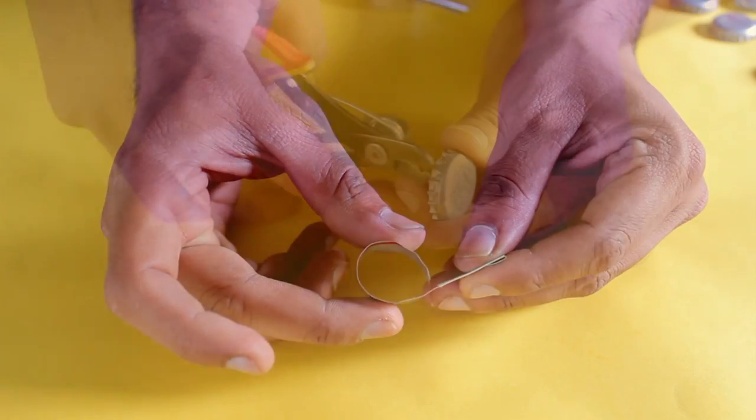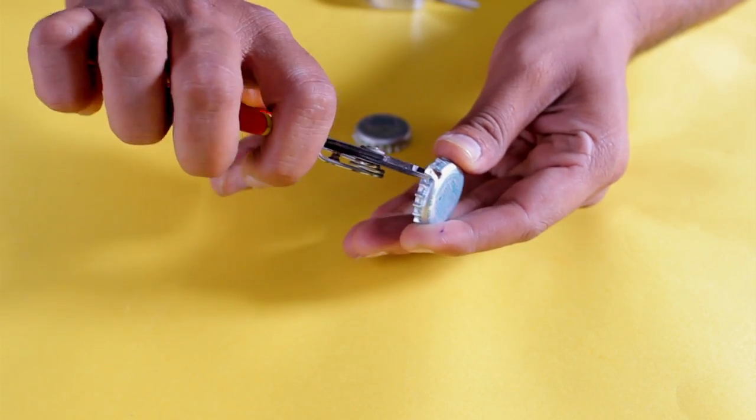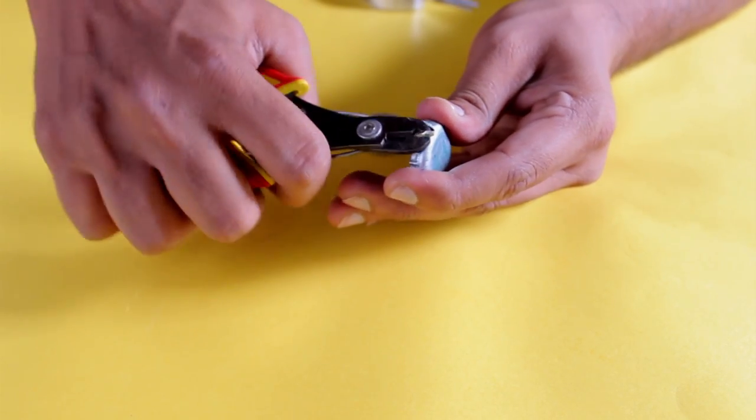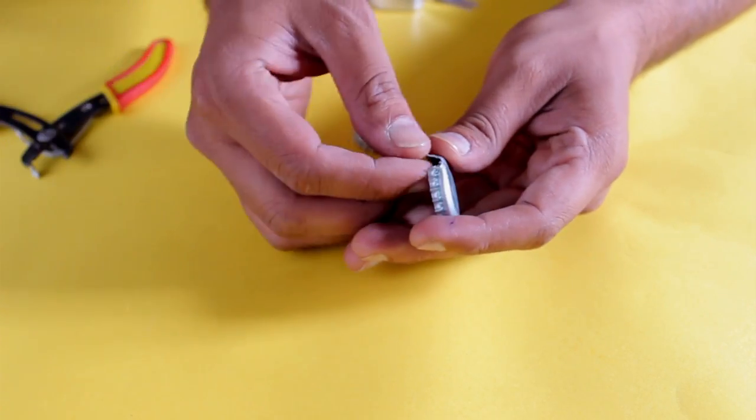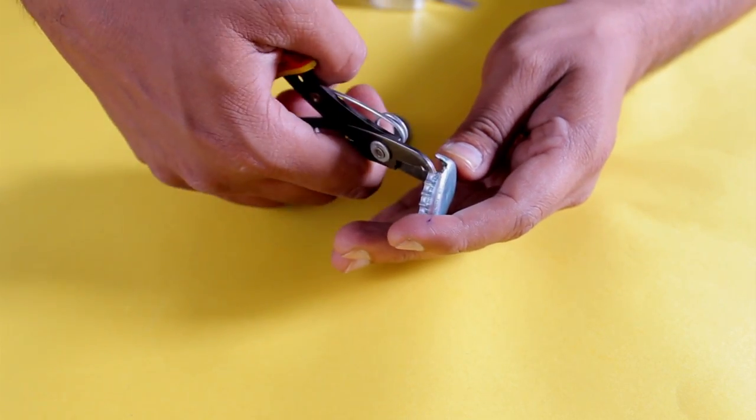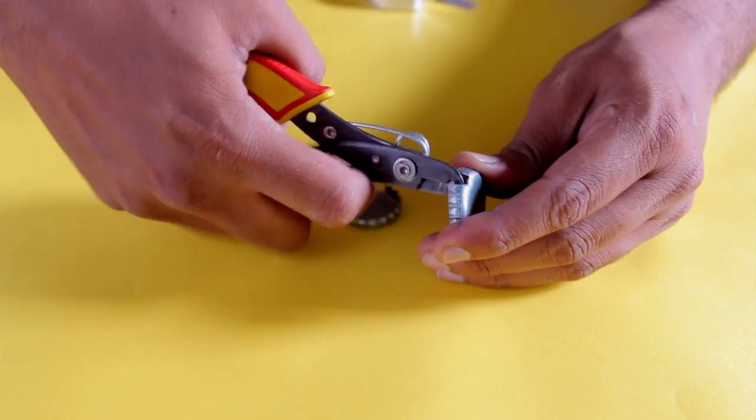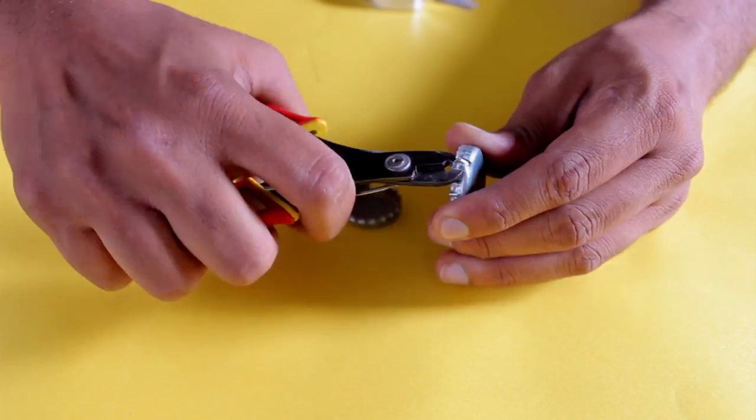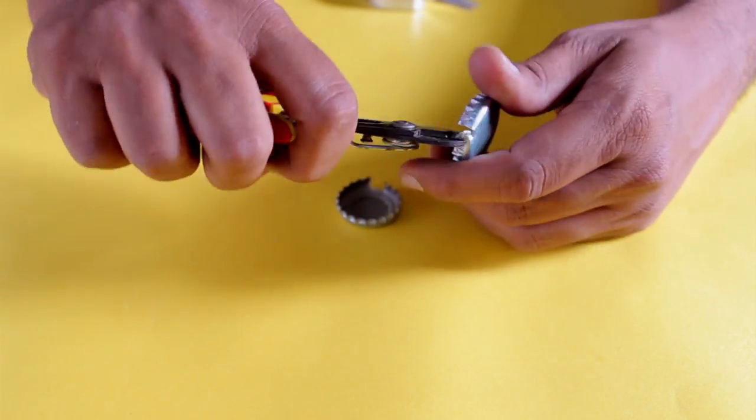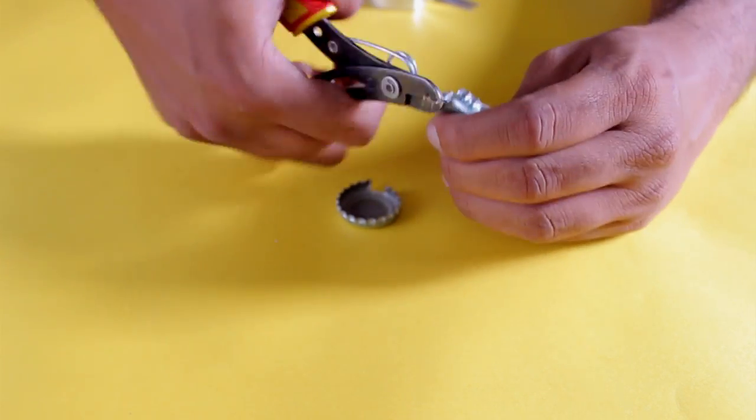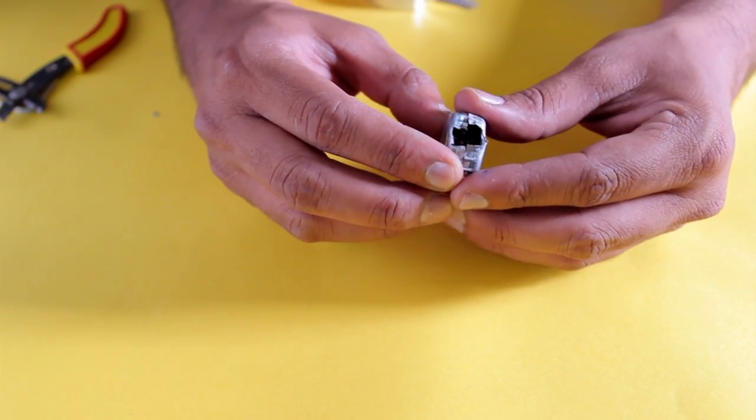Now take two bottle caps and make two cuts on sides like this. After the cuts are made, the two caps look like this.